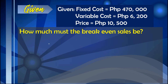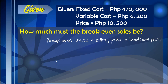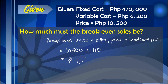The last question is: how much must the break-even sales be? To find the break-even sales, we follow the formula: break-even sales = selling price × break-even point. The selling price is $10,500, and the break-even point is 110 sofa chairs. Therefore, break-even sales = $10,500 × 110 = $1,155,000. To have a break-even in one month, the company should achieve sales of $1,155,000.